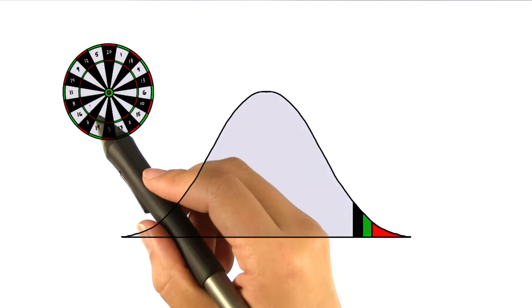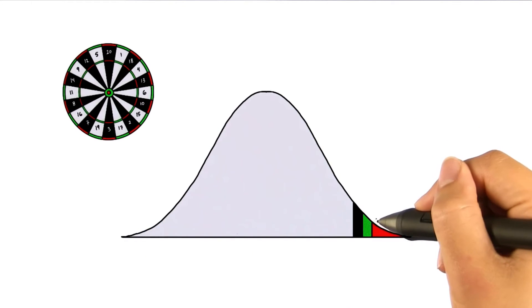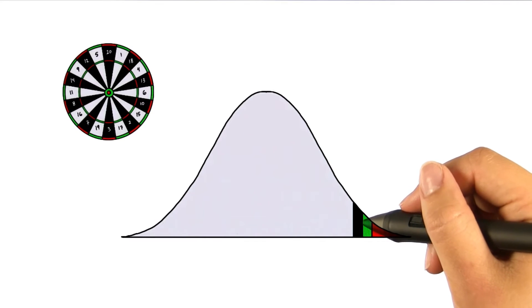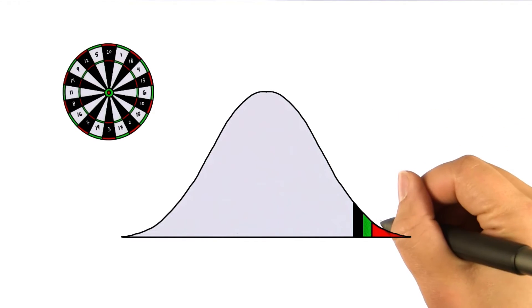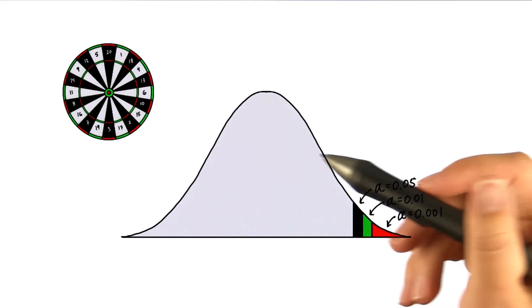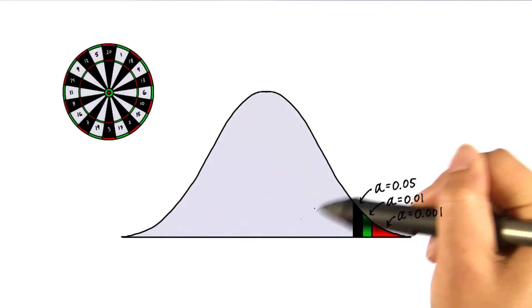These targets on a dartboard are analogous to the critical regions, with the boundary of each region on the dartboard analogous to the different alpha levels. We can easily get a mean within this area, in the middle of the distribution.